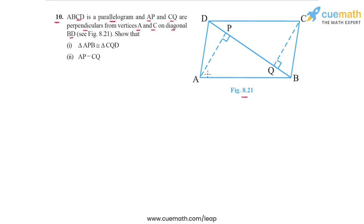So these dashed lines that you see in the figure, the perpendiculars from A and C onto BD. So these are the perpendiculars onto the diagonal BD.